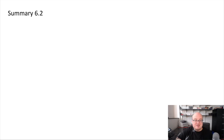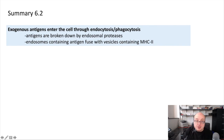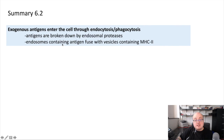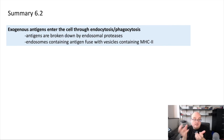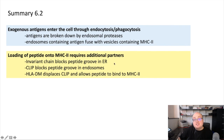Let's summarize exogenous antigen presentation. Exogenous antigens enter the cell through endocytosis, phagocytosis, and all those ways that cells take things in. These antigens are broken down not by the ubiquitin proteasome system, but instead through proteases within the endosomes themselves that are activated by the acidification of the endosome. These endosomes containing antigen then fuse with vesicles containing MHC class II — these two vesicular structures need to come together to bring the peptide fragments into proximity to MHC class II so it can be loaded. The loading of peptide onto MHC class II requires additional partners: the invariant chain blocks the peptide binding groove while MHC class II is still in the ER.